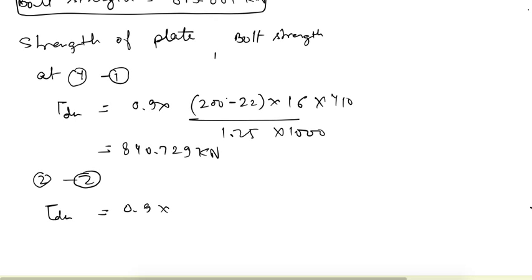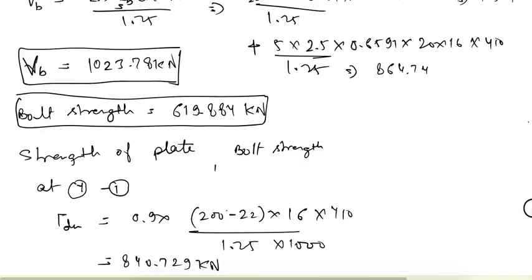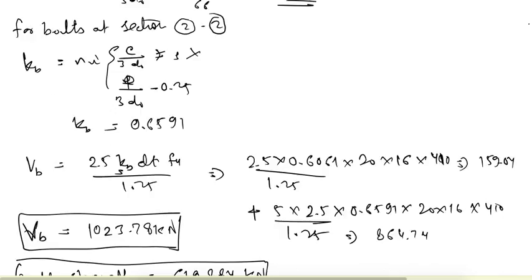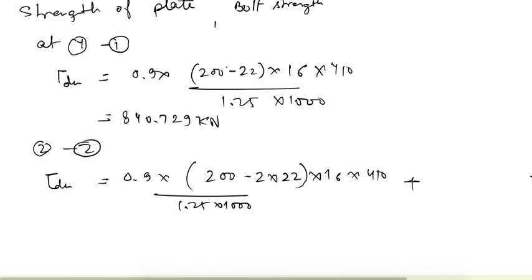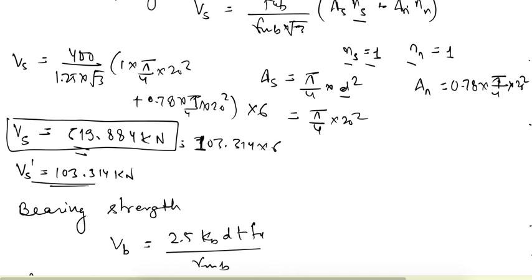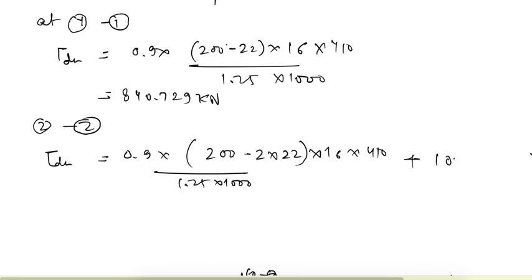At section 2-2, Tdn = 0.9 into (200 − 2 × 22) into 16 into 410 divided by 1.25 into 1000, plus the strength of the bolt at that section. The strength of a single bolt is 103.314 kN, giving Tdn = 840.133 kN.